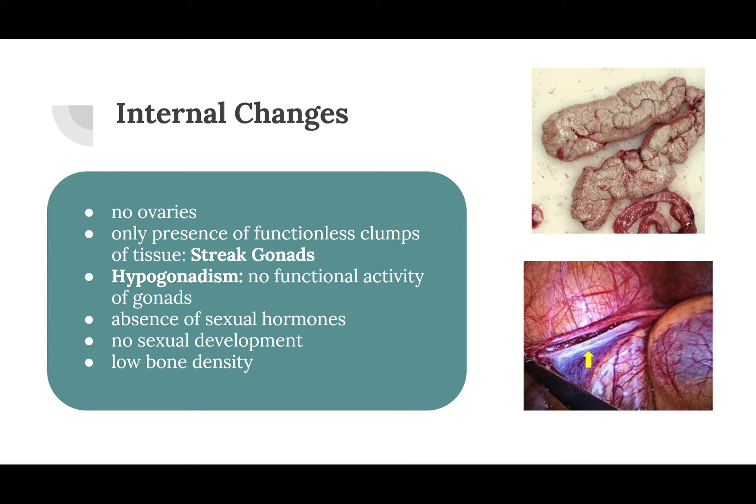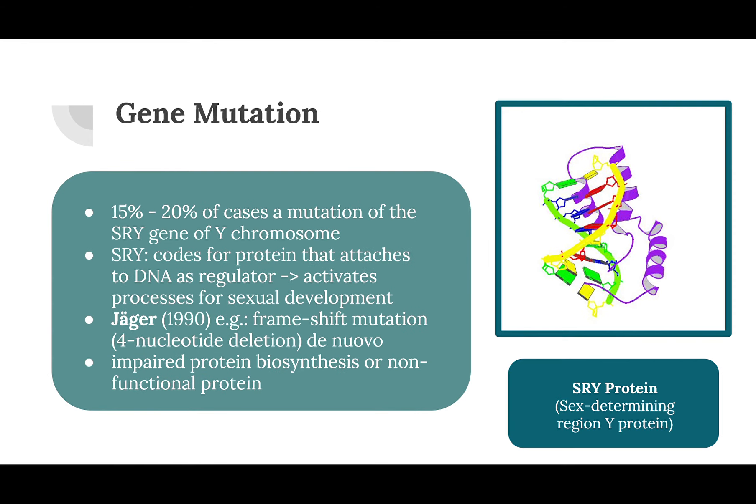The internal changes include a lack of ovaries. There is only the presence of functionless clumps of tissue called streaked gonads, as opposed to unaffected gonads. There is hypogonadism with no functional activity of these streaked gonads, an absence of sexual hormones for either sex, and no sexual development, so the person is generally infertile. An additional change could also be low bone density, tied to the hormonal development.